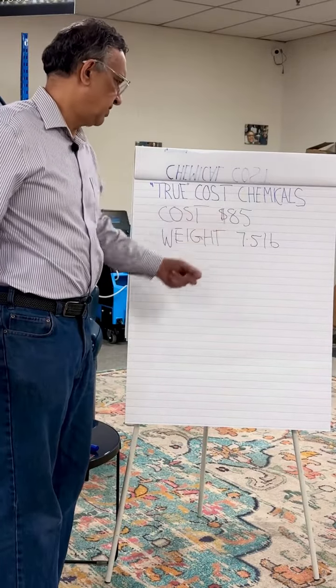That comes out to 120. So that means 120 is how many gallons of pre-spray you'll be able to make. But how do we figure out the cost per gallon?